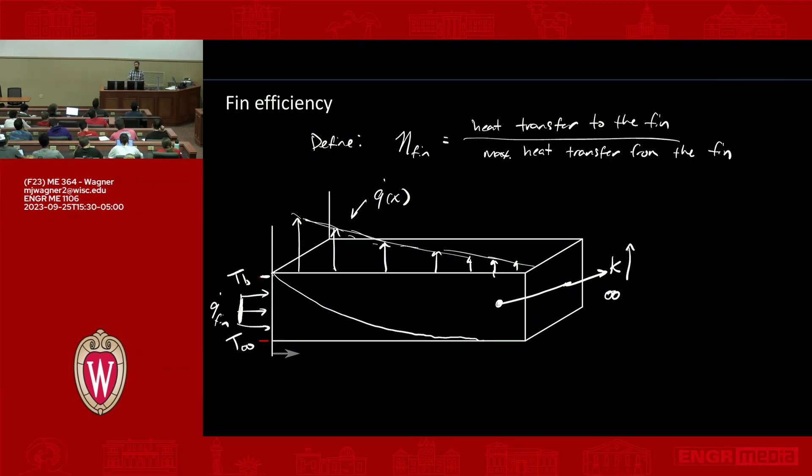And I'll maybe say it again slightly differently. So the maximum rate of heat transfer from this fin is the base temperature minus T infinity times the heat transfer coefficient times the entire area of the fin. The entire area is held at TB. So we're basically looking at the ratio between these two quantities.